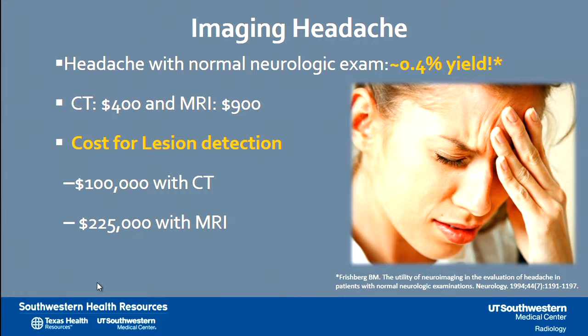As Dr. Lesson alluded to, it's been pretty well documented that at least in the setting of migraine headaches with a normal neurologic exam, the yield of neuroimaging is relatively low. If we assume a head CT costs about $400 and an MRI costs $900, which are pretty reasonable estimations, the cost of detecting one lesion on neuroimaging would be $100,000 for CT and $225,000 for MRI. Those are probably the facts, at least in this clinical setting.